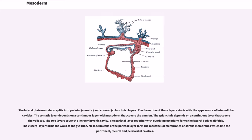The lateral plate mesoderm splits into parietal and visceral layers. The formation of these layers starts with the appearance of intercellular cavities. The somatic layer depends on a continuous layer with mesoderm that covers the amnion. The splanchnic depends on a continuous layer that covers the yolk sac. The two layers cover the intraembryonic cavity. The parietal layer together with overlying ectoderm forms the lateral body wall folds. The visceral layer forms the walls of the gut tube. Mesoderm cells of the parietal layer form the mesothelial membranes or serous membranes which line the peritoneal, pleural and pericardial cavities.